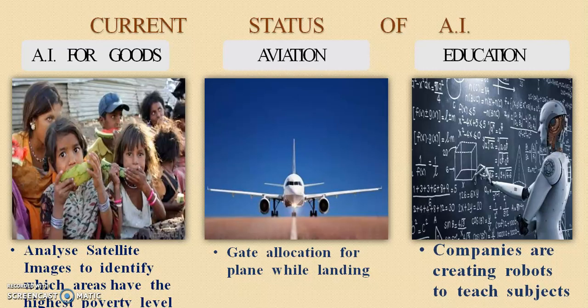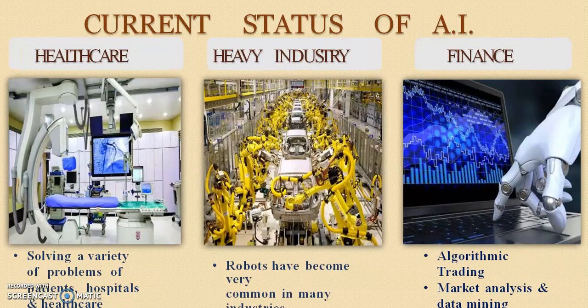Now, the current status of AI. AI is used in many applications — for example, AI can be used for goods distribution, identifying areas where the poverty level is high and providing goods to those areas. AI can also be used in aviation systems, such as gate allocation while a plane is landing. AI can be used in education, healthcare systems, and heavy industries, where robots can work very fast. AI can also be used in finance services like algorithmic trading, market analysis, and data mining.